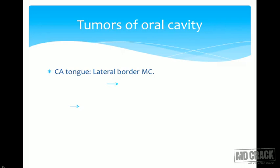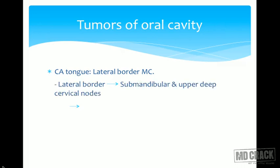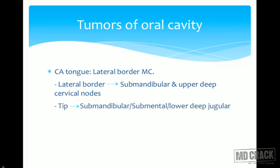In carcinoma of the tongue, the most common site where carcinoma occurs is the lateral border. From the lateral border, submandibular and upper deep cervical nodes are involved. If it involves the tip, it spreads into the submandibular, submental, and lower deep jugular lymph nodes.